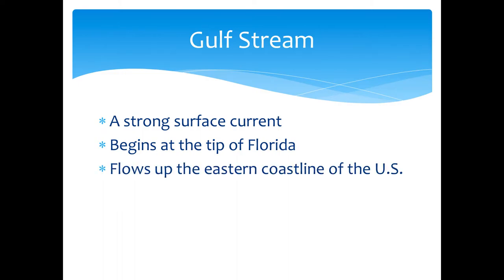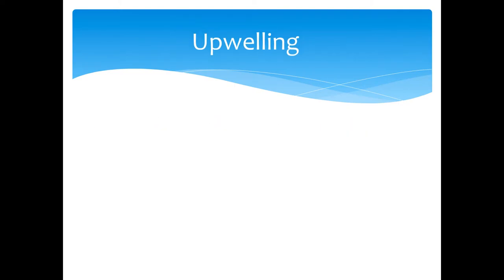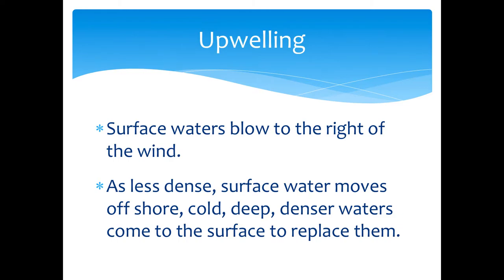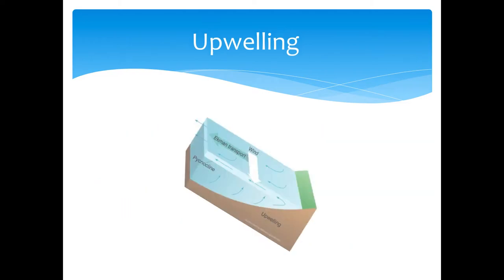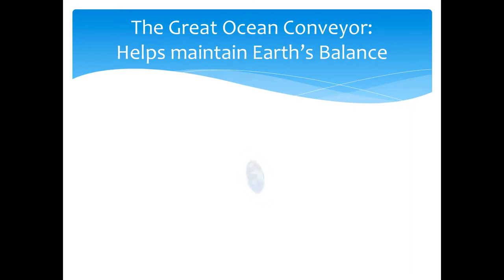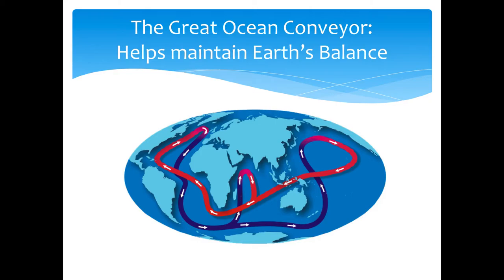The Gulf Stream is warm water — definitely know that. Upwelling is a vocabulary word you may hear on a test; just have an idea of what it means. You can find the United States on the left side of this map. You can see the Gulf Stream moving up, then cooling, then going to the bottom of the ocean. Again, it takes a thousand years for that water to go through the entire convection system.